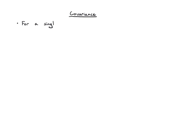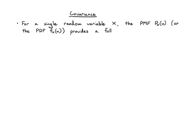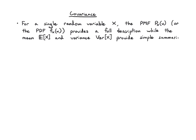Let's introduce the idea of covariance. For a single random variable x, the PMF p, or if dealing with a continuous random variable, the PDF f, provides a full description of the random variable, while the mean e and the variance are just simple summaries. The mean tells you the center of mass and the variance tells you how much the random variable varies around that center of mass.